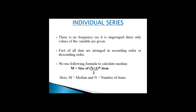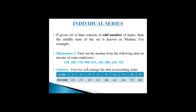Calculation of median in individual series or ungrouped data. In individual series there is no frequency as it is ungrouped data; only values of the variables (x) are given. First, data are arranged in ascending or descending order. Then we use the formula: M = size of (N+1)/2 th item, where M stands for median and N stands for the number of items. If the data consists of an odd number of items, the middle item is the median.